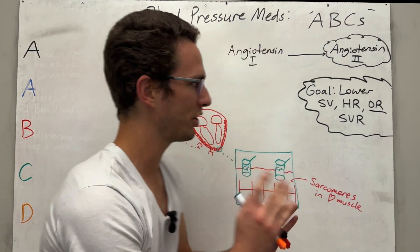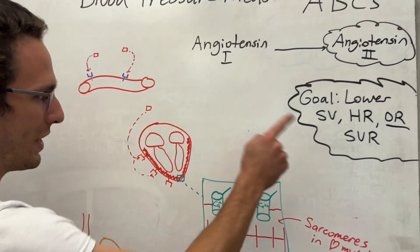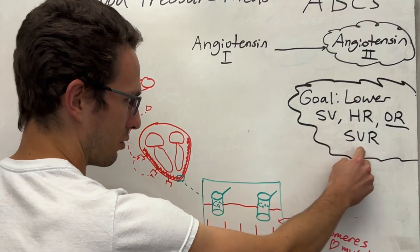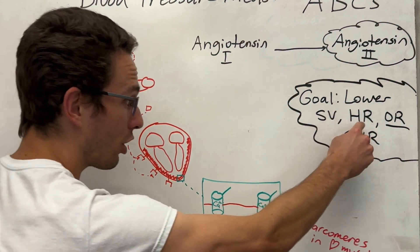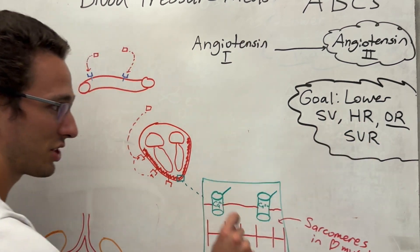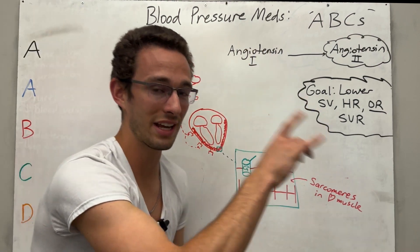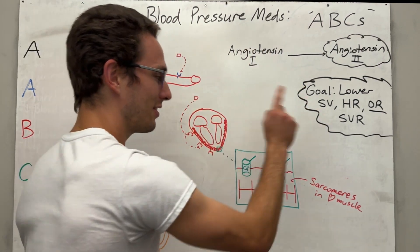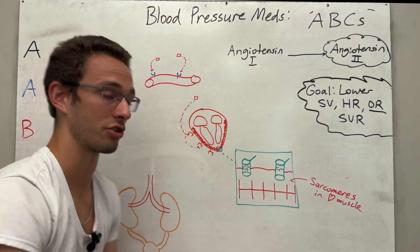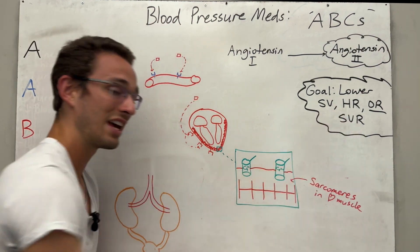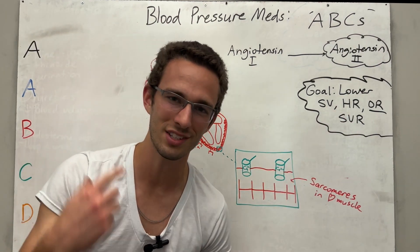So as we're thinking through them, I want you to keep in mind the main goal. We need to lower one of these three values: stroke volume, heart rate, or systemic vascular resistance. Those three things were covered in my previous video here. So if you haven't watched that yet, please jump over there first. And these things contribute to blood pressure. So if we lower any one of these, it will lower blood pressure. So let's get started.